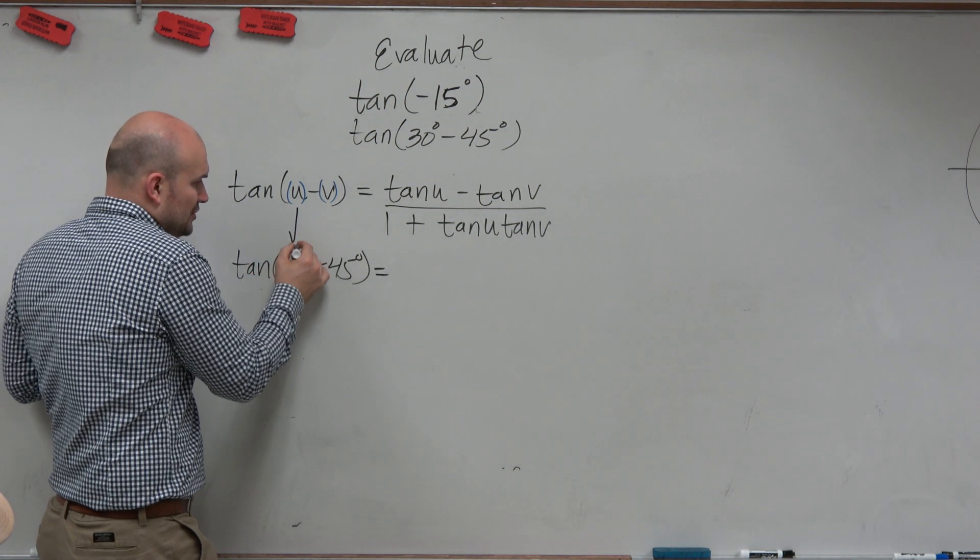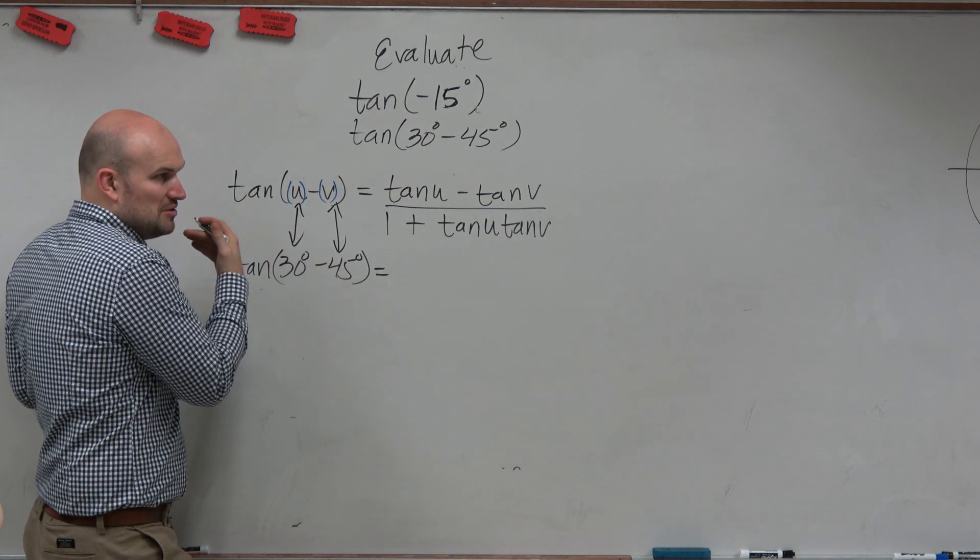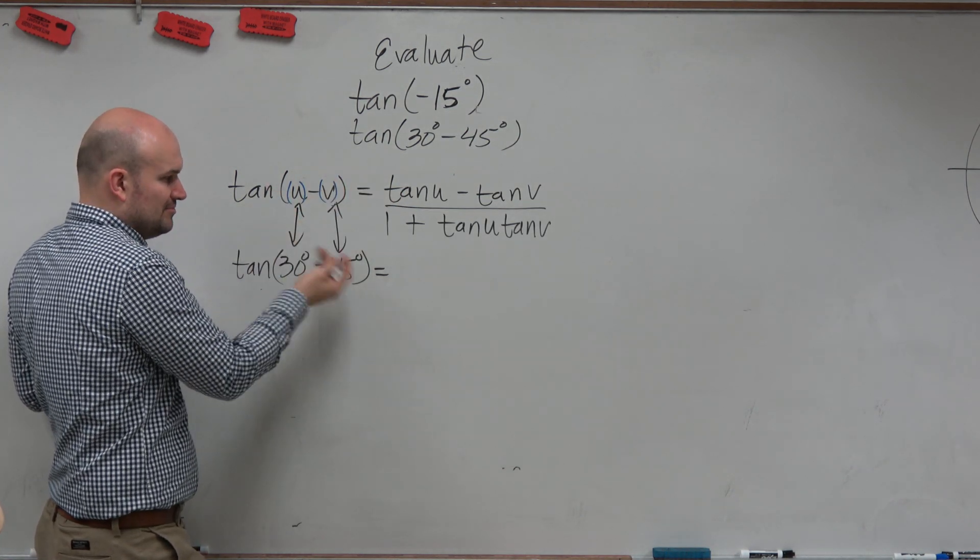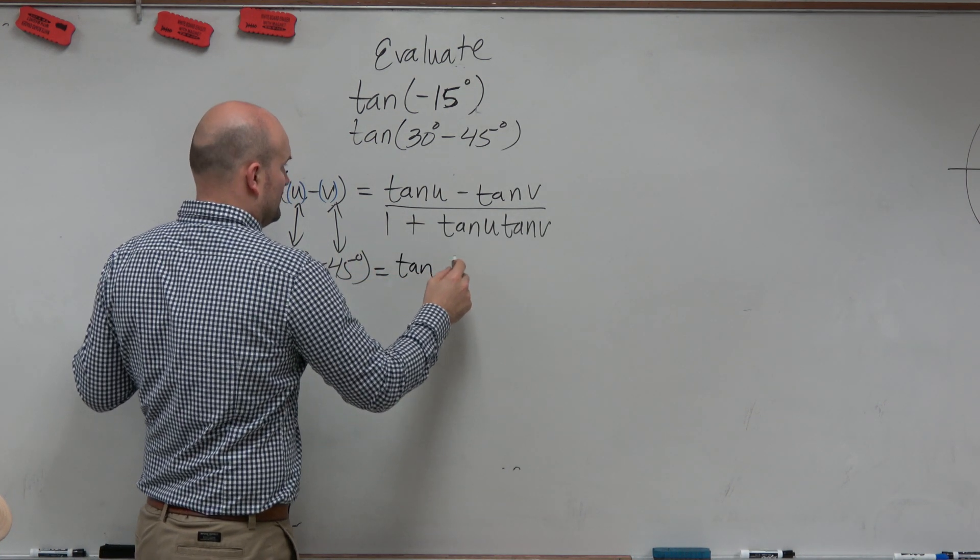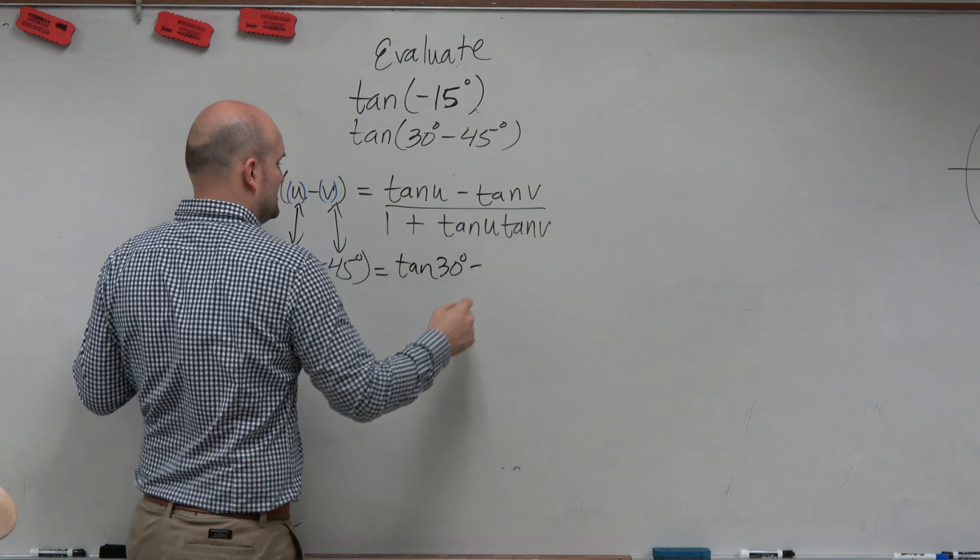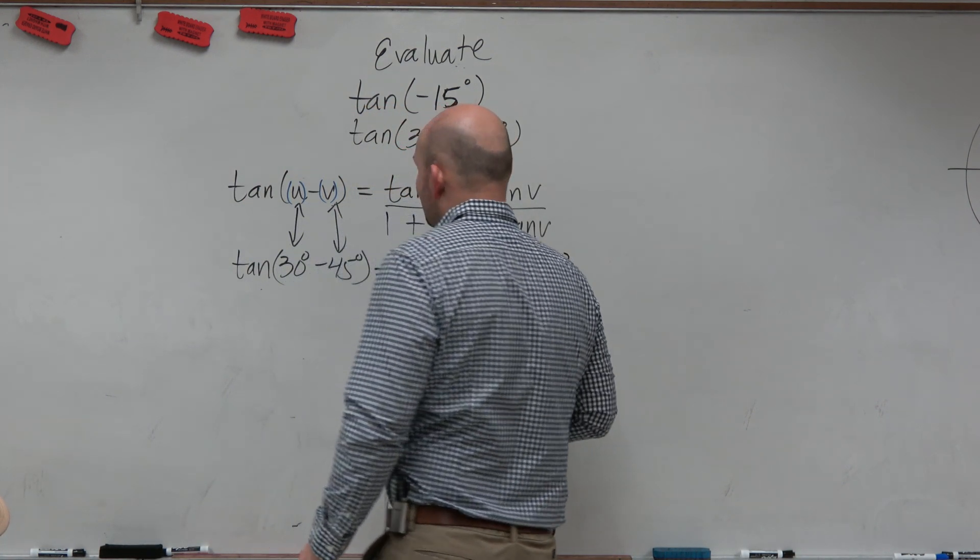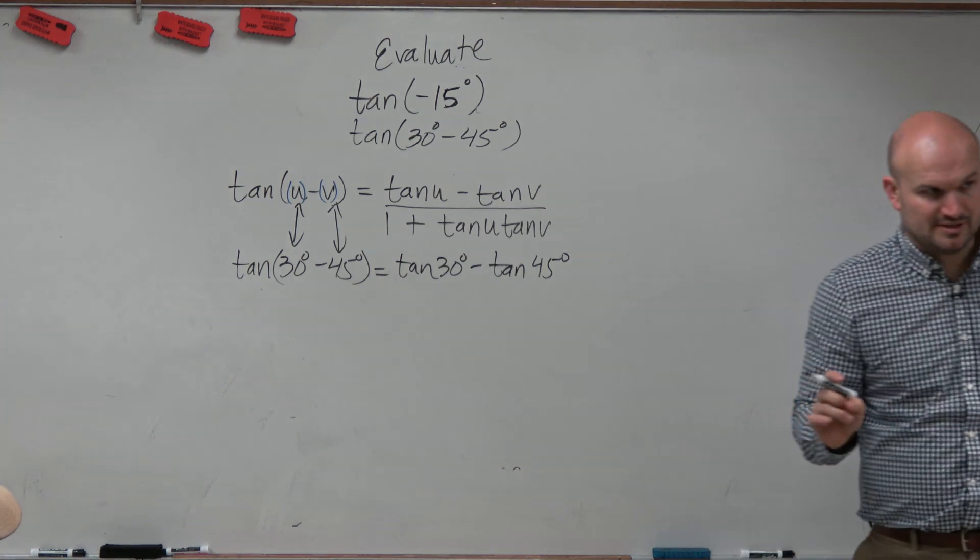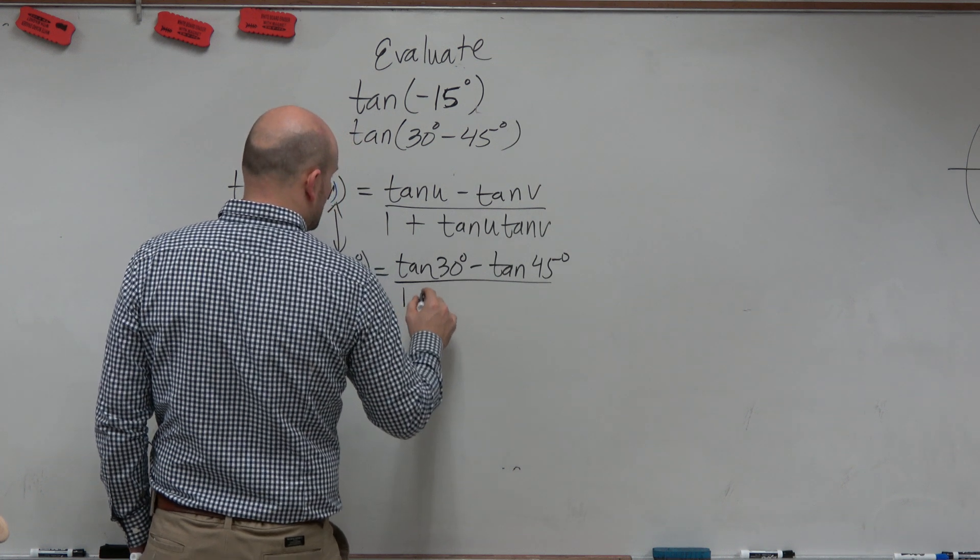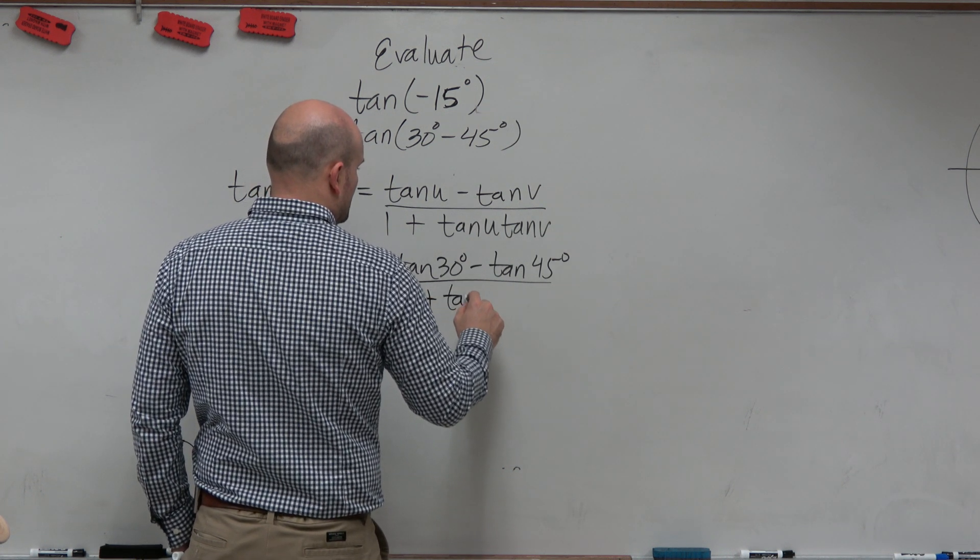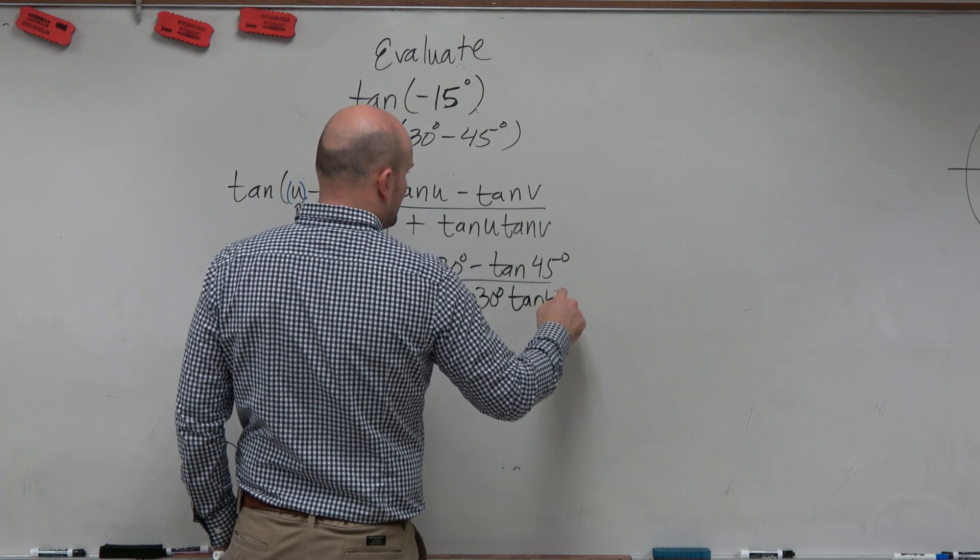Can't you guys see, u is 30 degrees and v is 45 degrees? Yes. So just whenever you see a u, put in 30 degrees. Whenever you see a v, put in 45 degrees. So I have tangent of 30 degrees minus tangent of 45 degrees. Again, don't do negative 45 degrees. It's 45 degrees. All over 1 plus tangent of 30 degrees times tangent of 45 degrees.